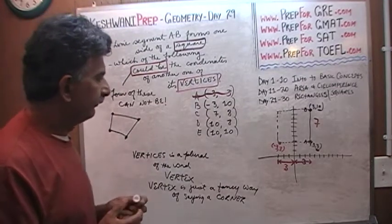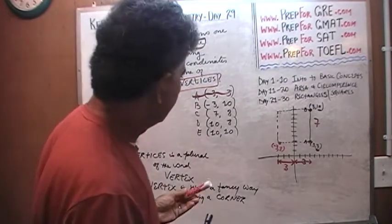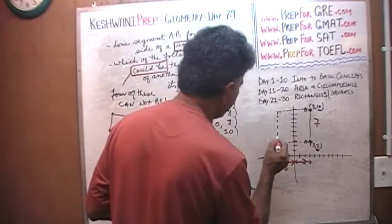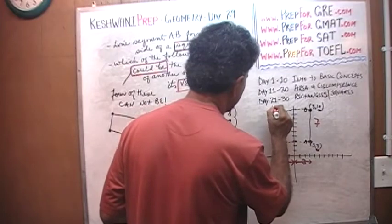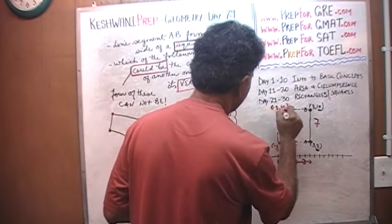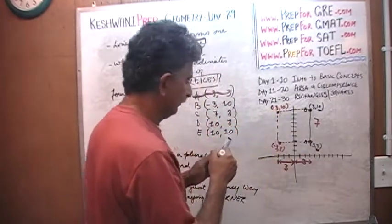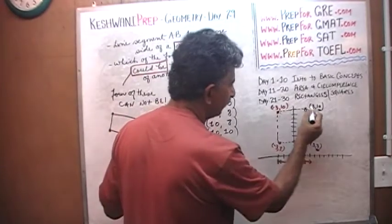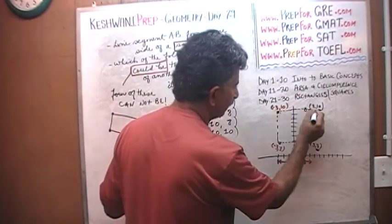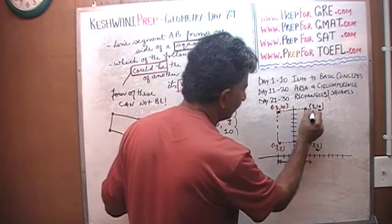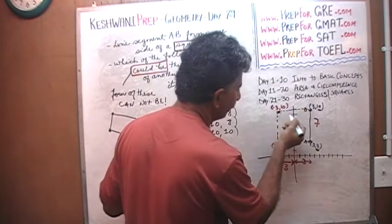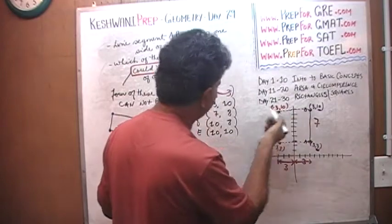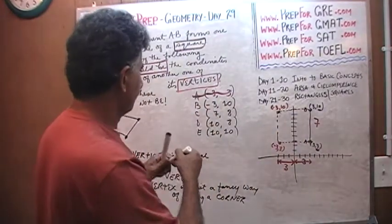Let's try B: (-3, 10). This has the exact same problem. From negative 3 to 3 is 6, but from 10 to 3 is 7. It doesn't work.